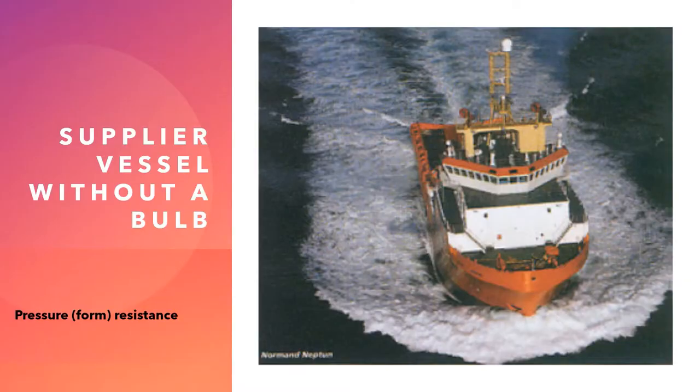The second type of resistance is pressure or form resistance. What you can see on screen here is a supplier vessel without much of a bulbous bow. The ship's momentum pushes the water aside at the bow, and as a result the pressure of the water increases. This increase in pressure also takes place aft, and the pressure will drop where the boundary layer is released.